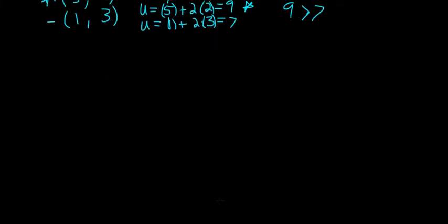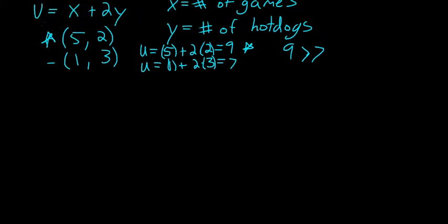But when I use utility this way to represent a person's preferences, it allows for the possibility that different utility functions could all represent the same preferences. So, let's say, for example, I have three bundles of goods: A, B, and C.